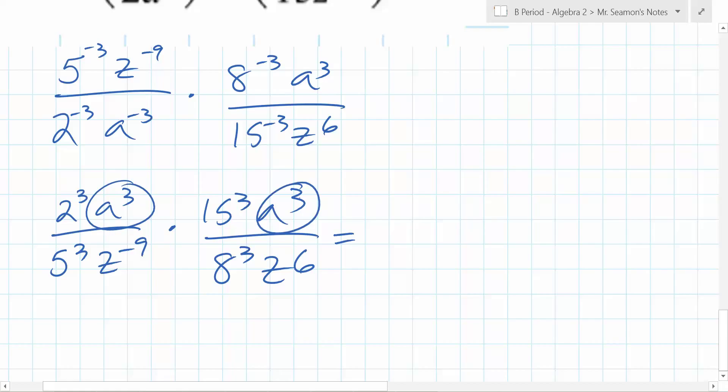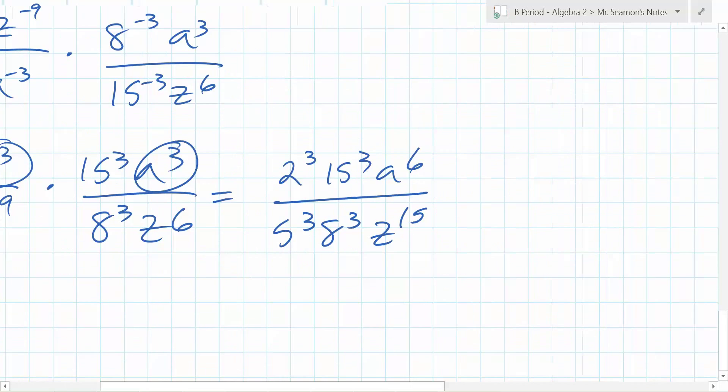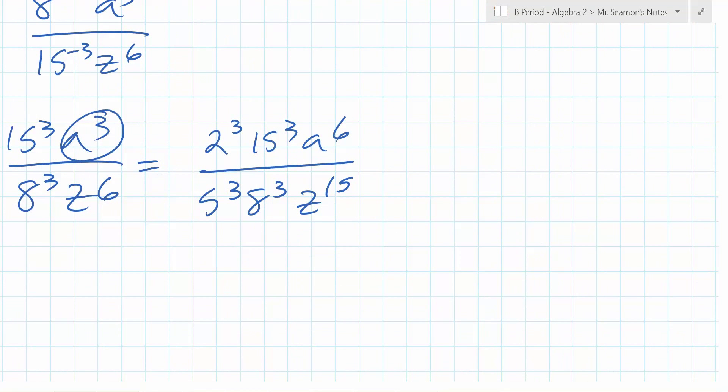What's a to the 3rd times a to the 3rd? a to the 6th. Correct. So you have a to the 6th over 5 to the 3rd. Oh, that's not negative, right? That's positive. So it's 5 to the 3rd, 8 to the 3rd, z to the what? 9. 15th. Right. Now here's the thing. Can you simplify this?